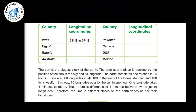The earth completes one rotation in 24 hours. There are 360 longitudes — 180 on the east side of the prime meridian and 180 on the west side. That means 15 longitudes pass by the sun in one hour, and one longitude takes four minutes to rotate. Thus there is a difference of four minutes between two adjacent longitudes, and therefore the time in different places of the earth varies as per their longitudes.